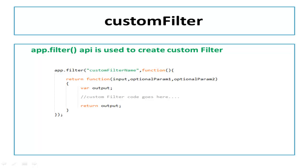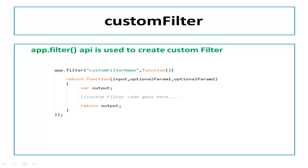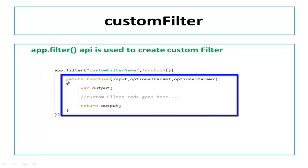AngularJS gives us a simple API to create custom filters. If you remember, we have used app.controller and app.module to create controllers and modules. The same way, AngularJS has given us an app.filter method to create a custom filter. To create a filter, the filter method takes two parameters — the first is the name of your filter and the second is an anonymous function. In this function, you have to return one function that holds the logic of your custom filter.